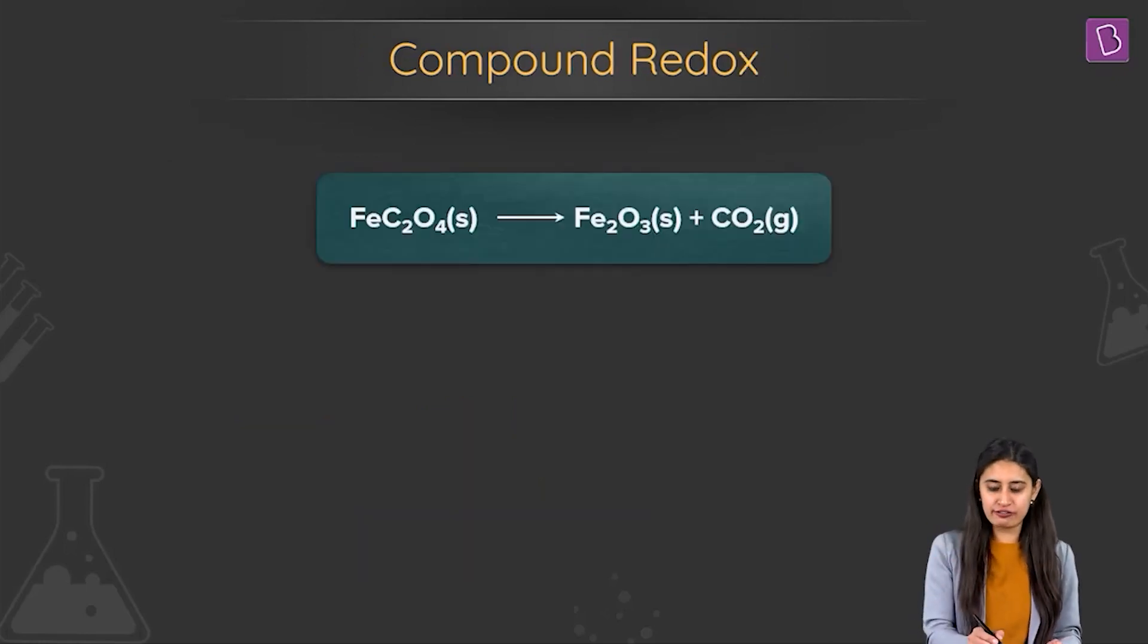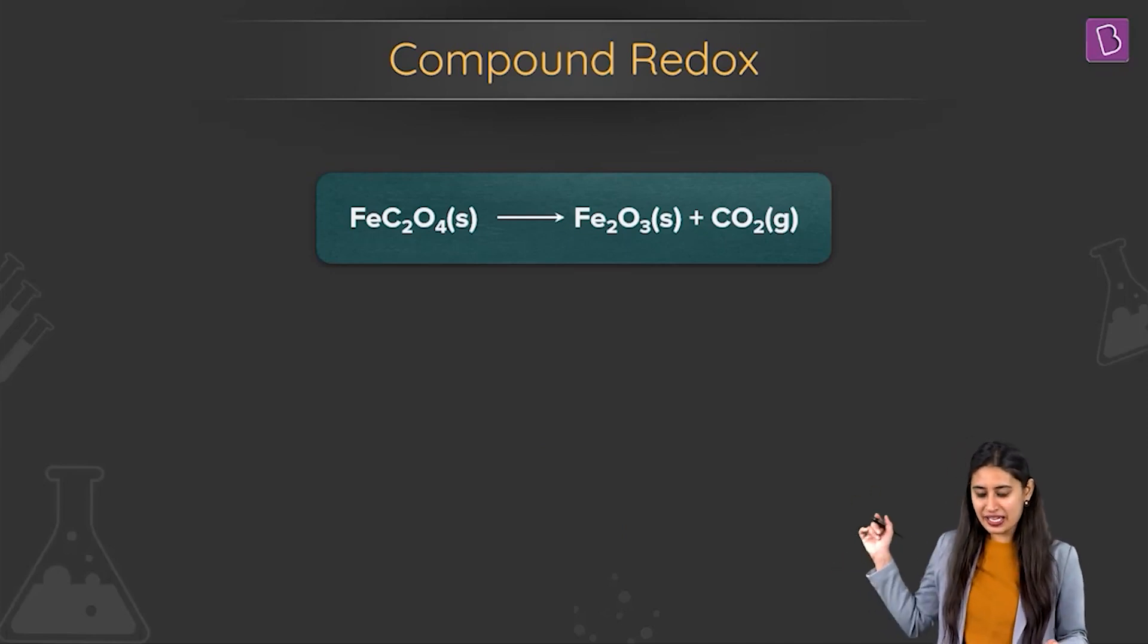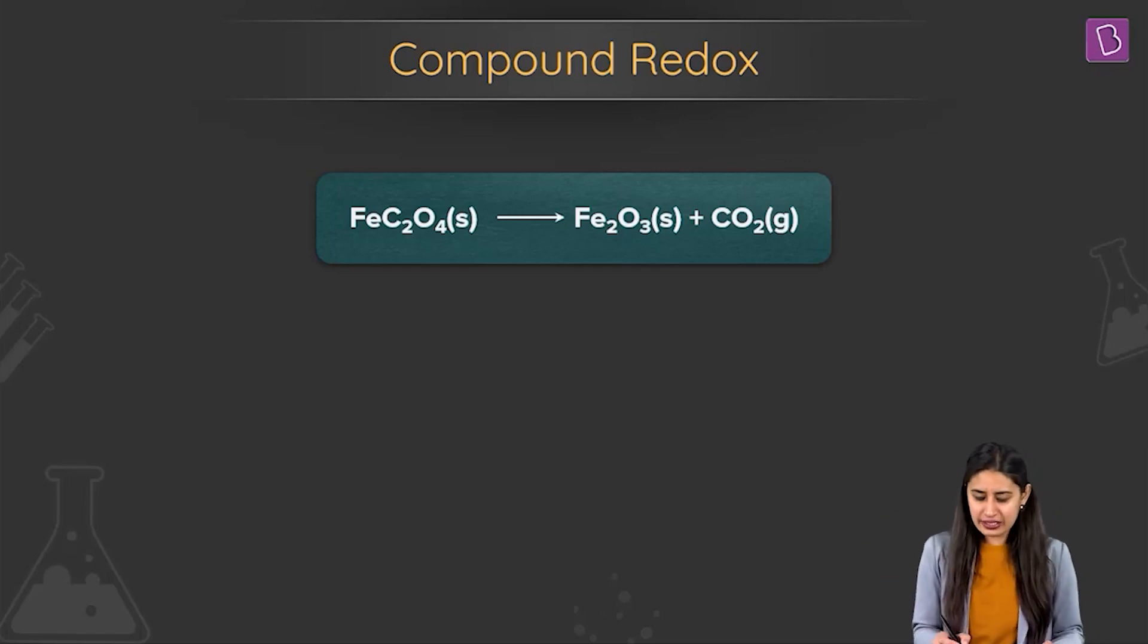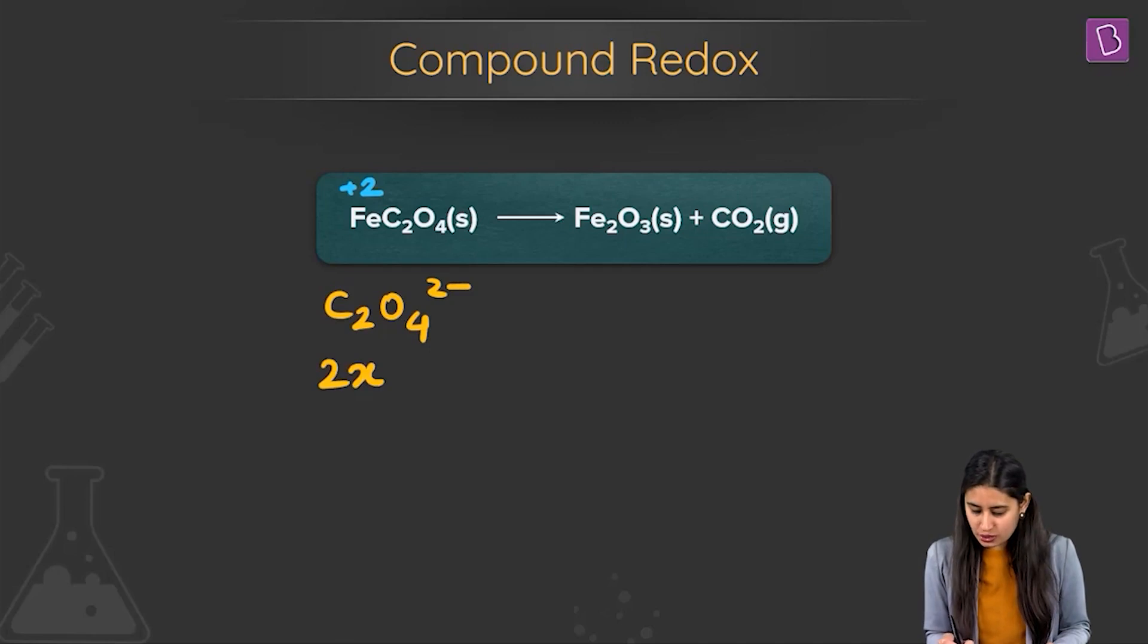Look at this very carefully. We have iron oxalate giving you Fe2O3. So iron is in plus 3 state. The oxidation state of iron is plus 3. So we get ferric oxide and carbon dioxide. Let's see iron in the reactant. It is plus 2. Let's see carbon in the reactant. Please see, I can write C2O4 2 minus. I can write it like this. 2x minus 8 is equal to minus 2. I can write it like this. 2x is equal to plus 6. I can write it like this. x is equal to plus 3.